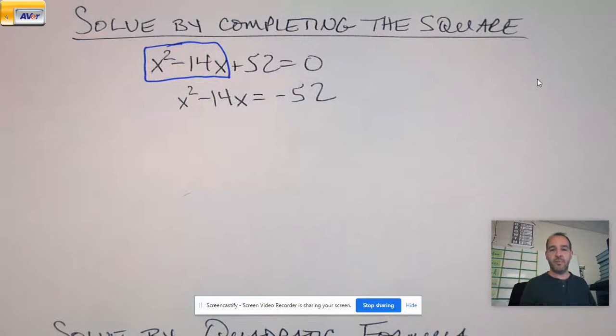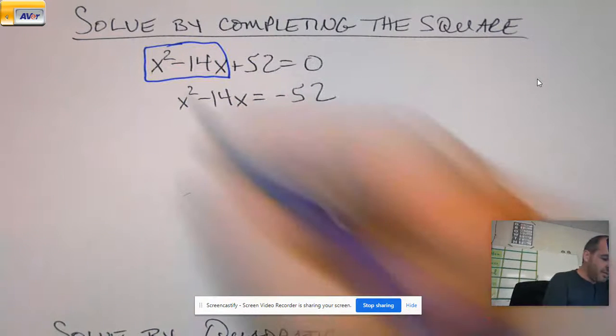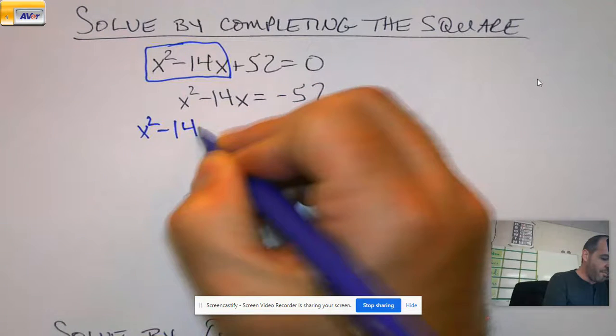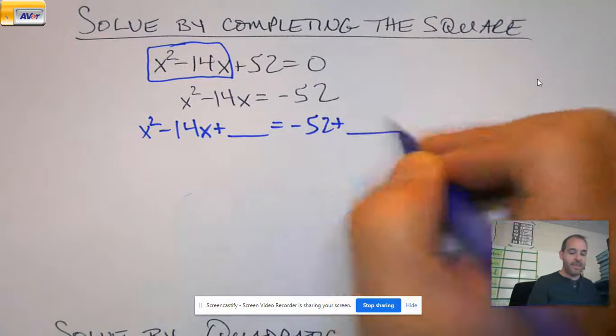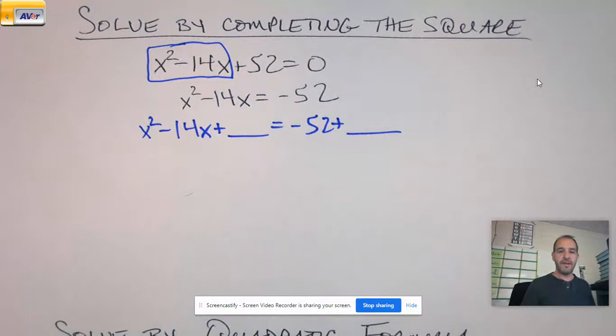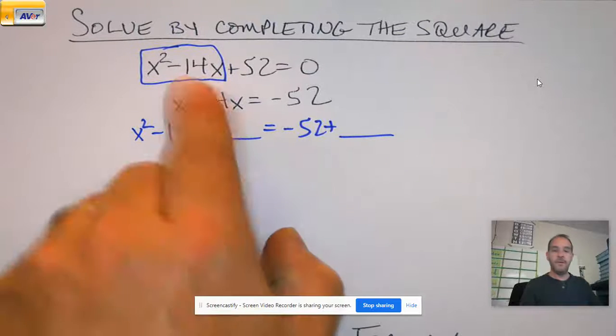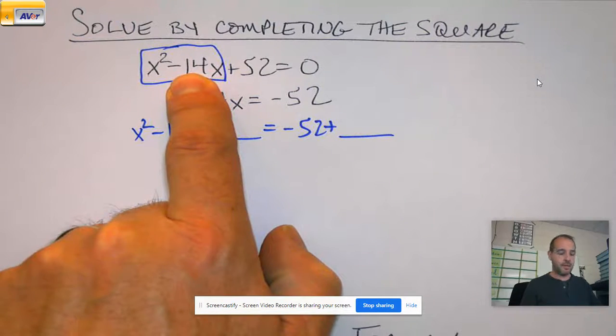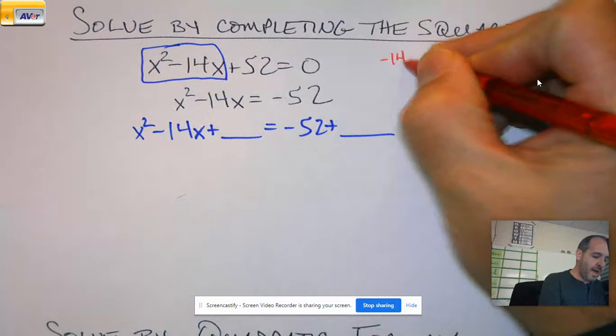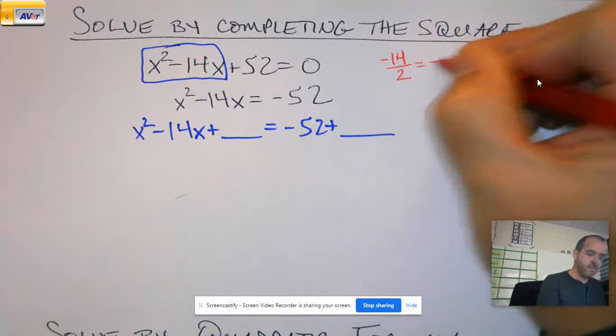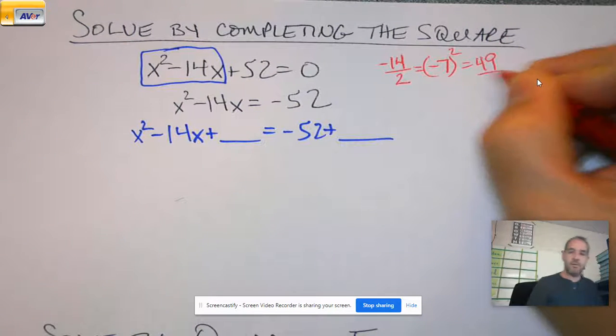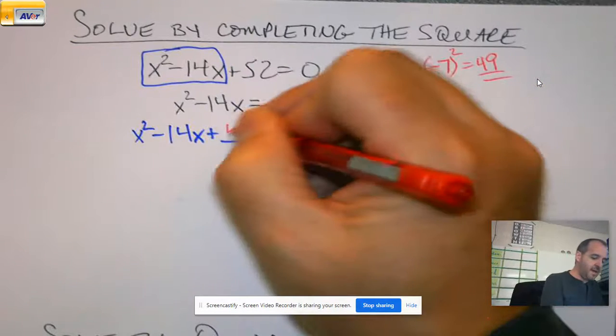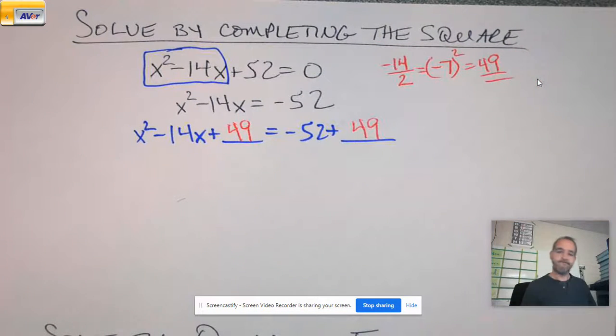Then our next step when completing the square is to add a blank to each side. Now, that blank, we're going to calculate that value here in just a sec. That value that we're going to plug in is found by taking our b value, our number in front of the x here. We're going to have b divided by two. We're going to square half b. We're going to add it here. We're going to add it there. Just getting the DJ Pi rolling in me today.